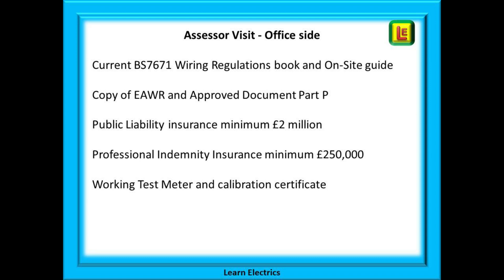The assessor will need to actually see a copy of the current BS 7671 Wiring Regulations — currently the 18th Edition. Most people will have a physical copy, but the online version is acceptable though more expensive. You will need to know how to use the book, as you are going to be asked questions on the Wiring Regulations. No book, and you will not pass your assessment that day.